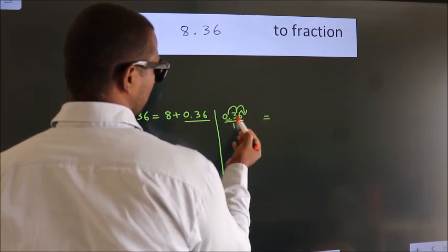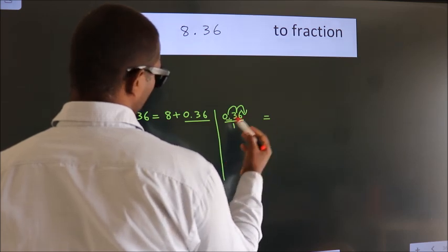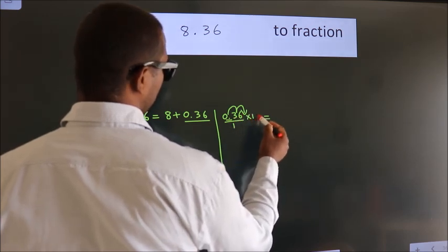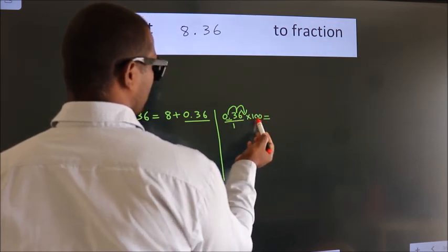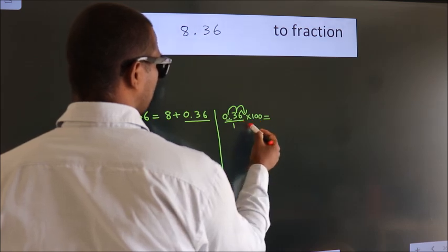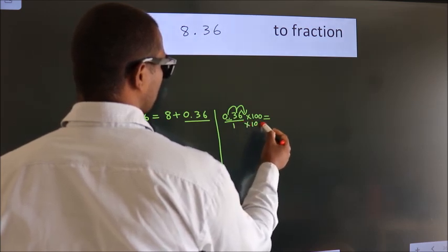To move this decimal after 2 numbers, multiply it with 100. Whatever you are multiplying in the numerator, in the denominator also do the same.